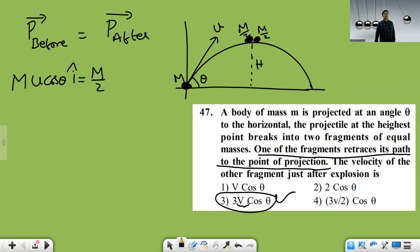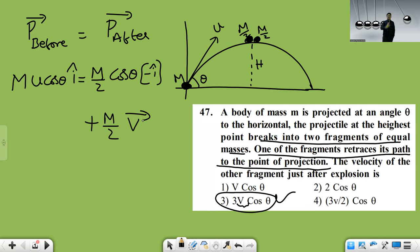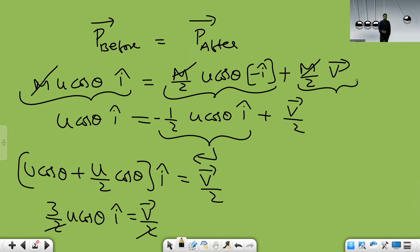Student question: 'Why did you take (M/2)·v̄ for the second fragment?' Teacher answer: Because the question says the bomb breaks into two fragments of equal masses. One fragment retraces the path — that one is (M/2)·u·cosθ·(−î). For the other fragment they didn't give any information about velocity, so I just assigned its velocity the name v̄. Is it clear?